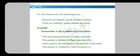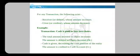For every transaction the following exists: there is a receiver and there is a giver. The receiver, or debitor, is the one whose amount increases. The one who is receiving is known as a debitor, and the one whose amount decreases is the creditor. Let's take one example: cash is paid to buy two chairs.